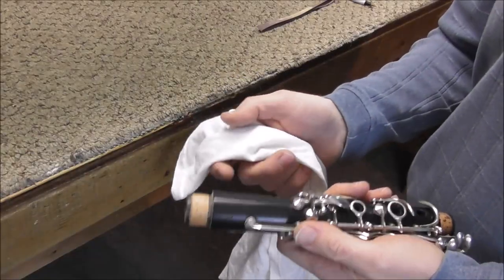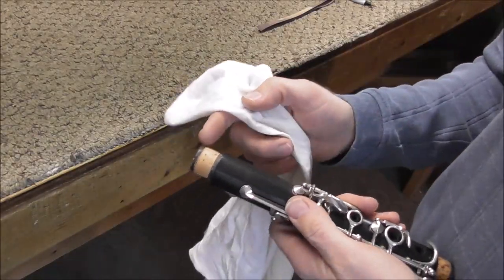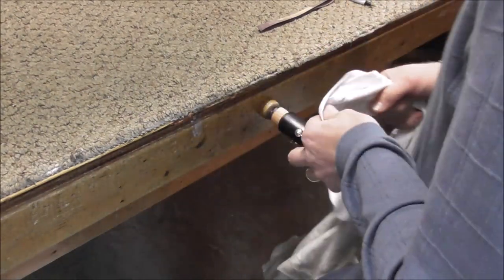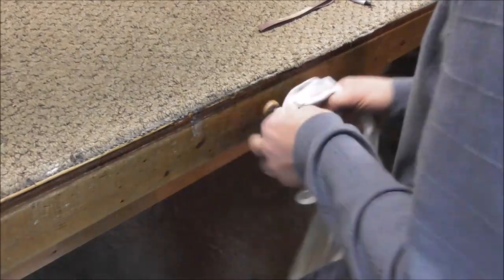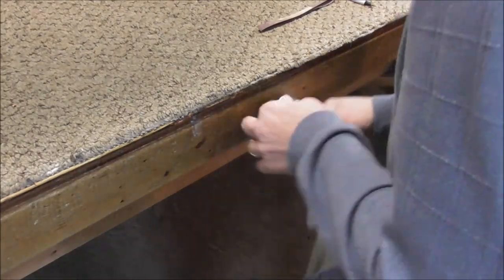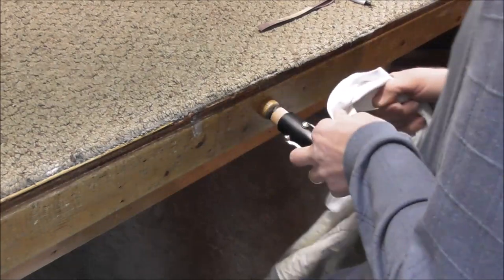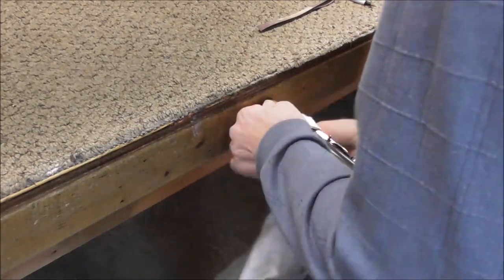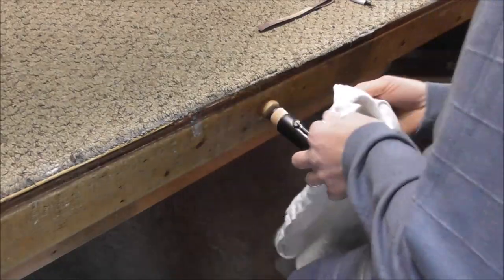When you're done sanding, take a t-shirt type material and clean off the excess glue that is on the tenon. And you do that pretty much the same way you sanded it, just turn it around as you go and that will clean off the glue that is on there.